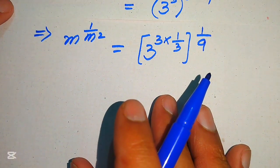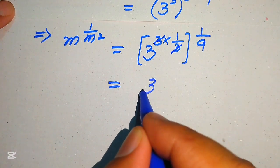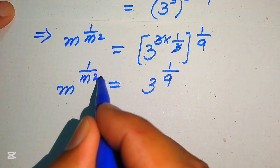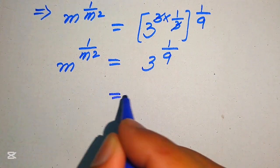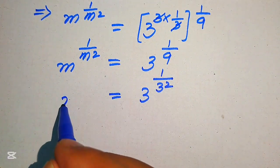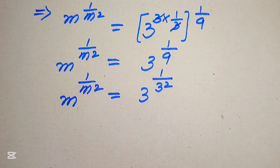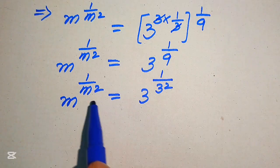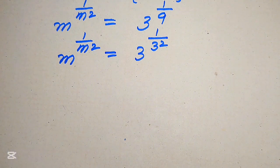Simplifying further, the 3 in the base and the 3 in the exponent cancel, giving 3 to the power of 1 over 9 on the right hand side. We then write 9 as 3 squared, so the right hand side becomes 3 to the power of 1 over 3 squared. Now both sides have the form where the exponent is the square of the reciprocal of the base.